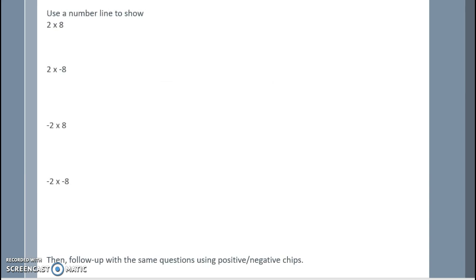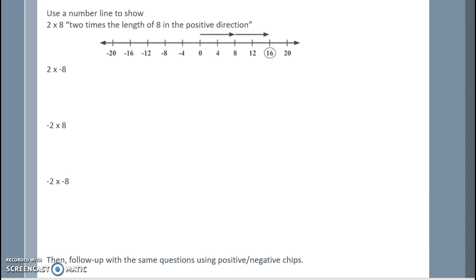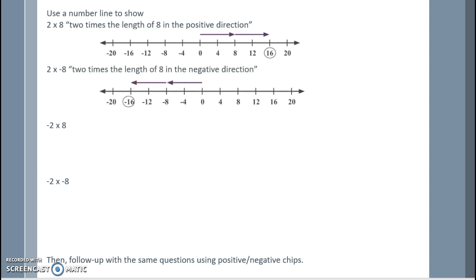Let's use a number line to show 2 times 8 and 2 times negative 8. We want 2 times the length of 8 in the positive direction. So we start at 0, there's 8, and we go twice to get to 16. Here, we want 2 times the length of 8 in the negative direction, so we go 2 copies of 8 in the negative direction for negative 16.